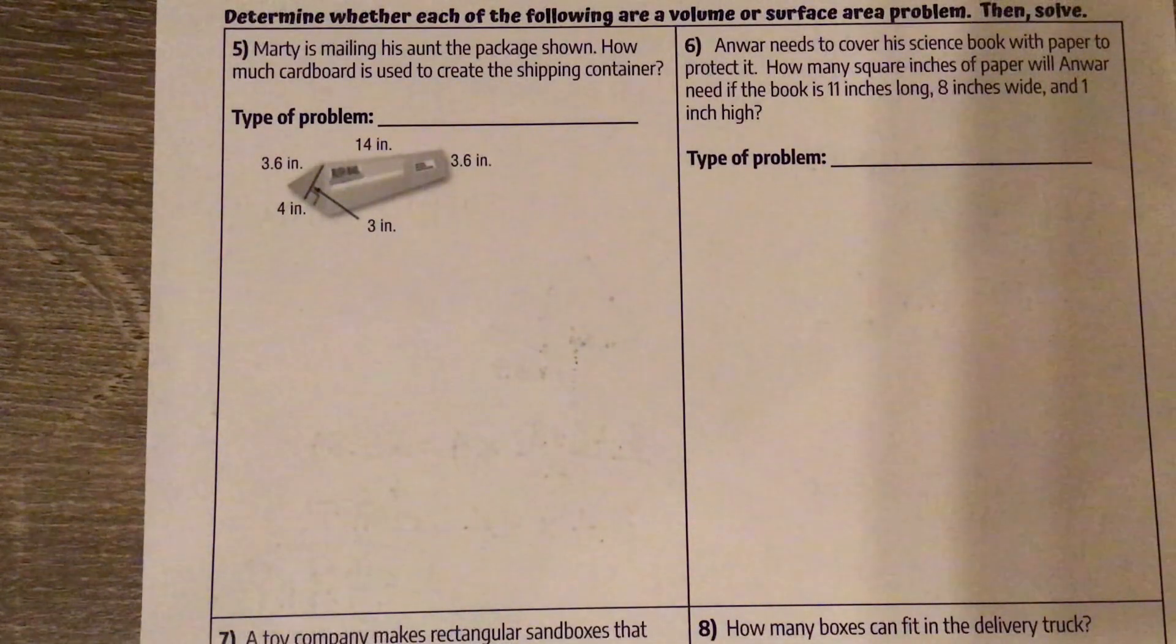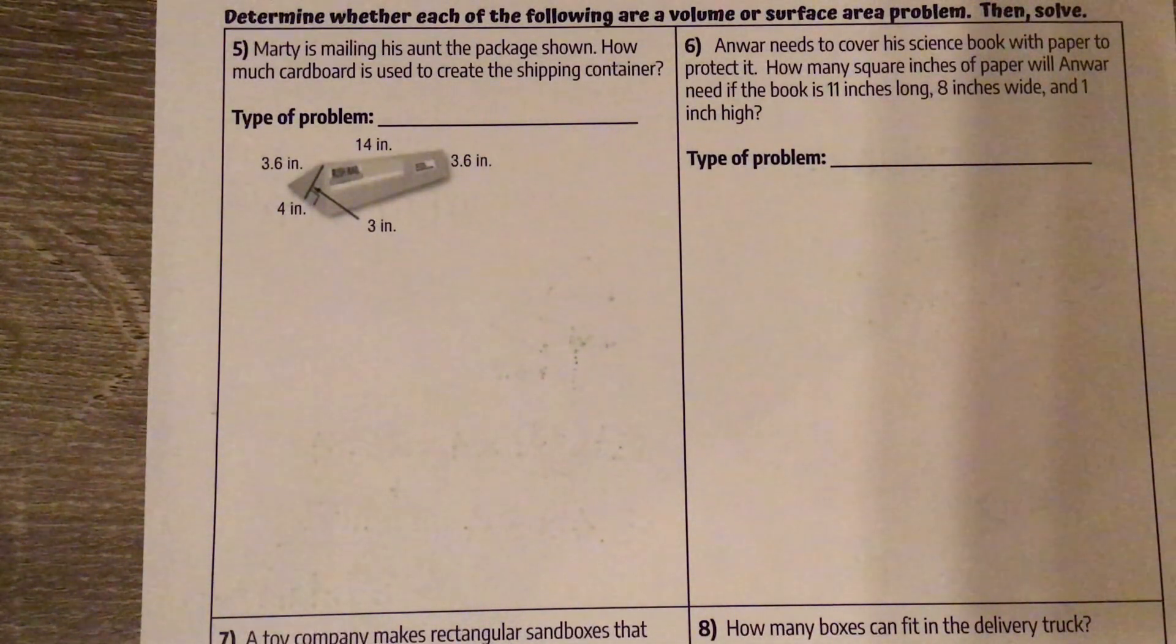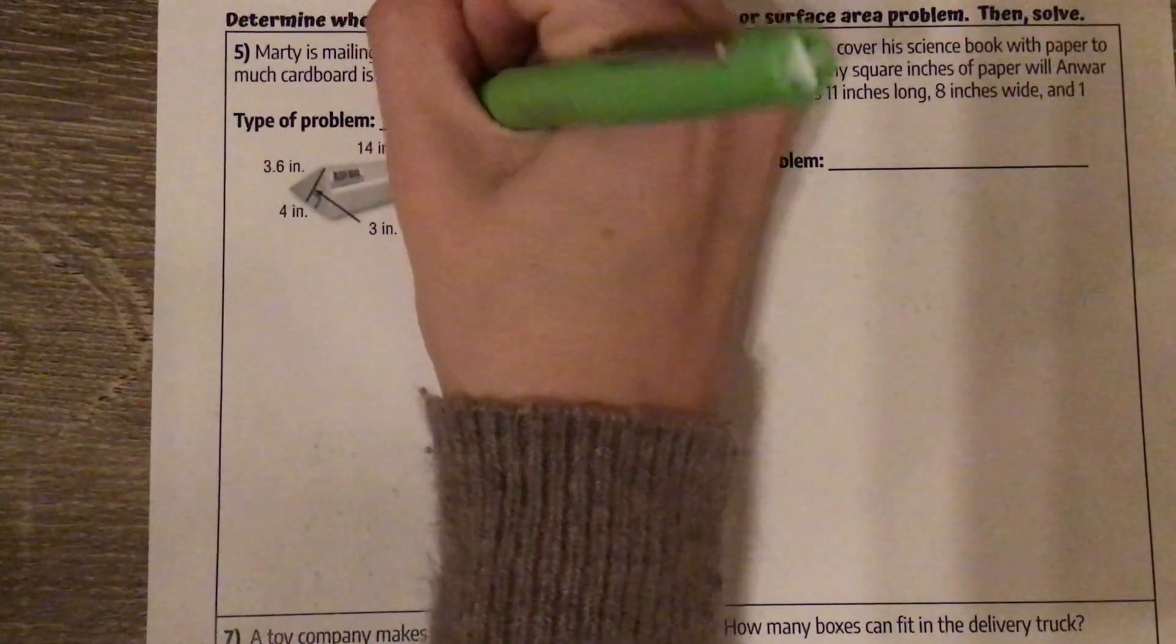Marty is mailing his aunt the package shown. How much cardboard is used to create the shipping container? So the shipping containers are hollow. We're just talking about the surface. So this is a surface area problem.